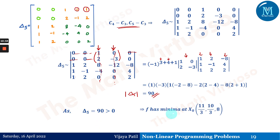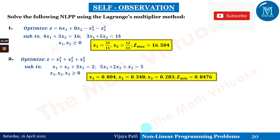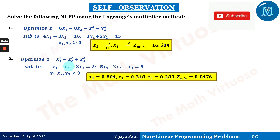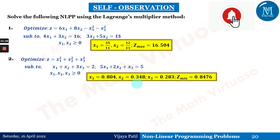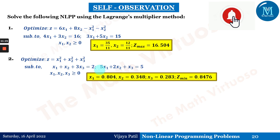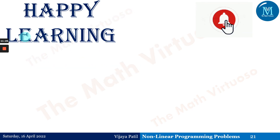Since δ5 = 90 > 0, which matches the required sign of +1, f has a minimum at the computed values. Therefore, z_minimum = 820/9. The self-observation slide provides two additional practice questions with two constraints and their answers. Please solve those, and post any doubts in the comment section. Stay connected and happy learning!